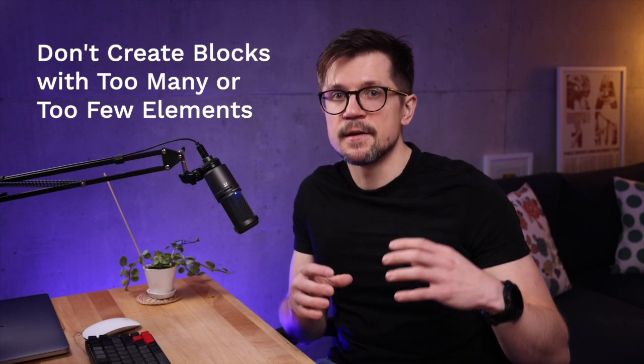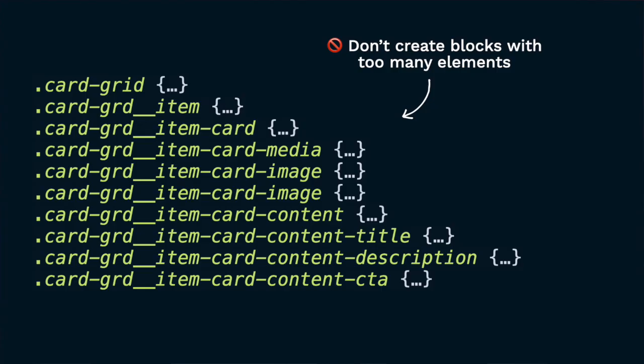The last mistake is creating blocks with too many or too few elements. For example, instead of separate grid and card blocks, you could create one block that does both — but you'd end up with nine elements, making the CSS file large and hard to scan, and missing the benefit of a clean abstraction system. Similarly, don't create blocks that aren't reused at all — like abstracting card content into its own block if you're never reusing it anywhere. What's the point?